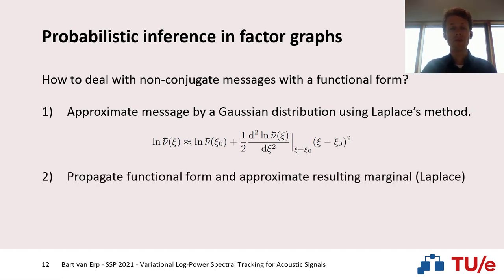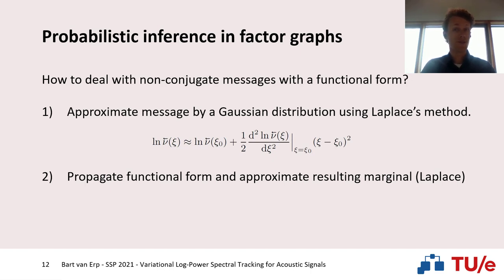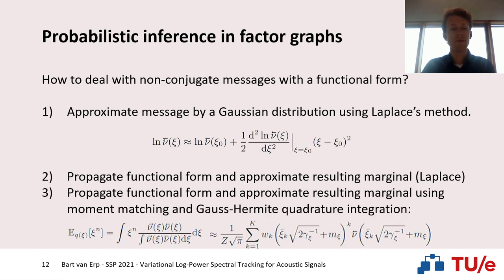A second approach is to propagate this functional form along our graph edge, and instead of approximating the message directly, we approximate the resulting marginal. We first calculate the product analytically using the message with its functional form and the incoming message, then approximate the resulting marginal using, for example, Laplace's method. A third solution is to approximate this resulting marginal using moment matching by performing Gauss-Hermite quadrature integration.